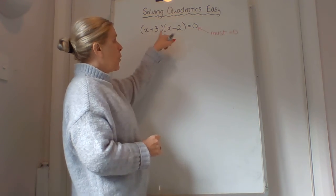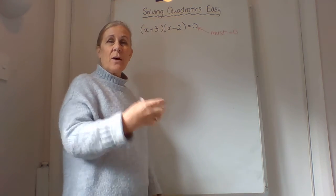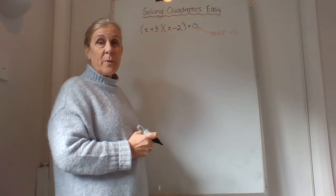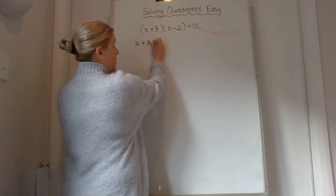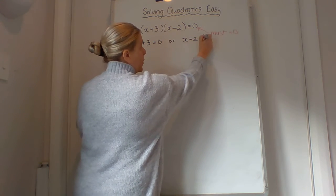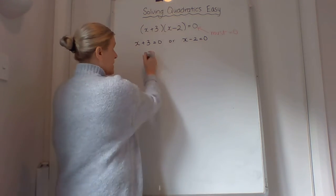So if this is 0, or if this is 0, then the answer will be 0, because 0 times anything is 0. And these two factors are multiplied together. So that means that if this solves to 0, or this solves to 0, we have found out what x can be. So we get two answers for this.